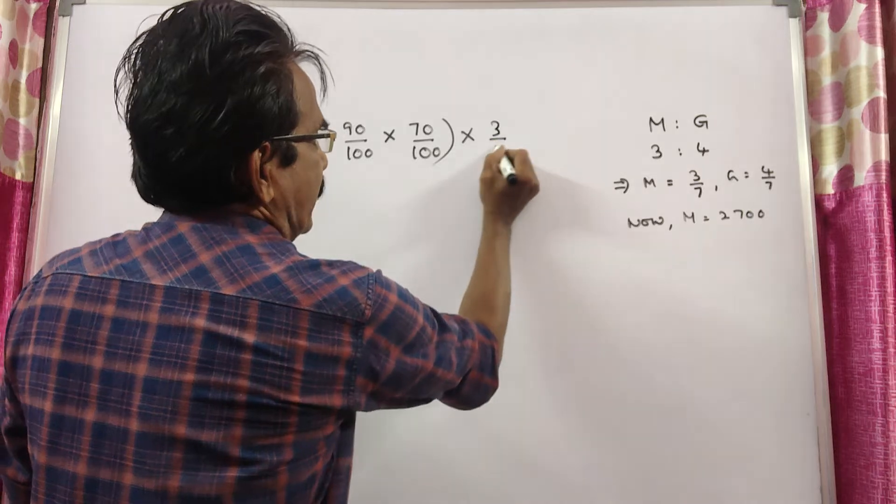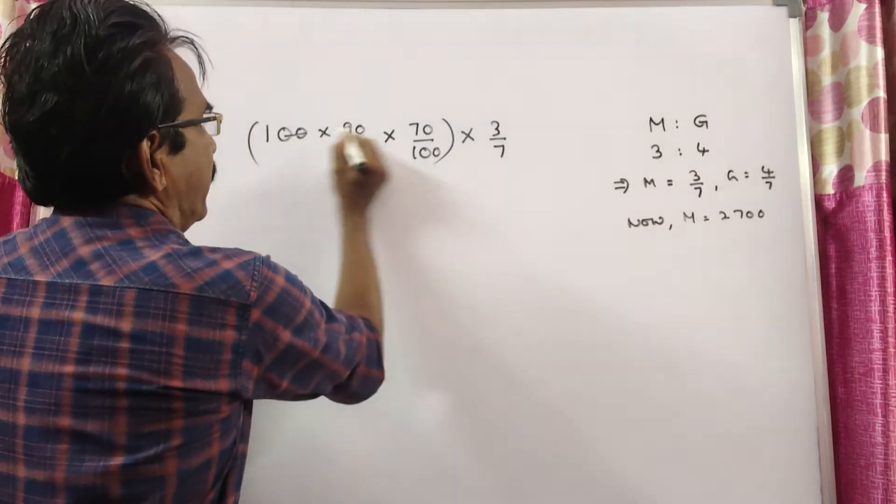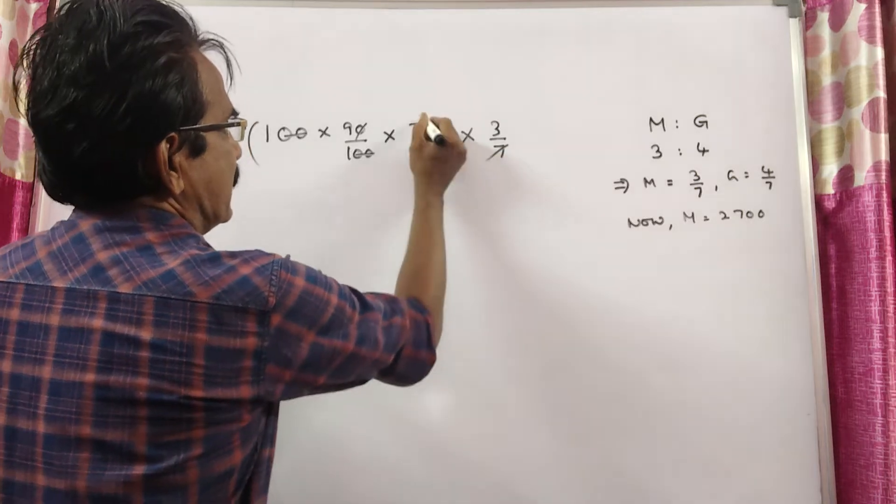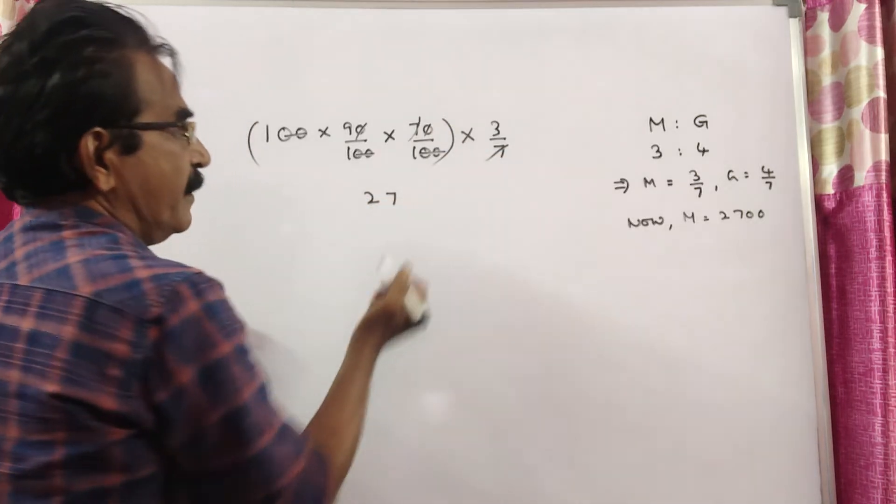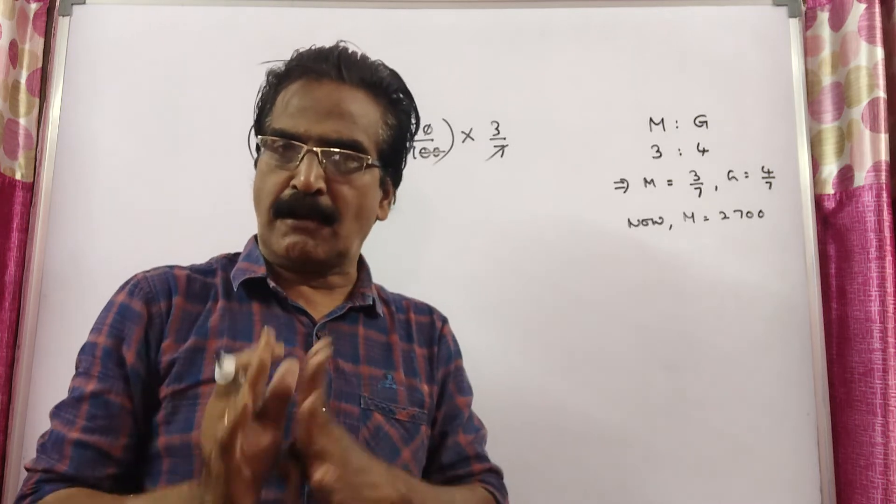Let us calculate the expenditure on medicine. 100 gets cancelled, 7 gets cancelled, giving us 27. So 27 is the expenditure on medicine.